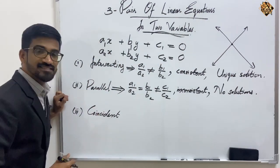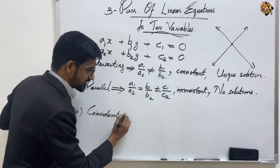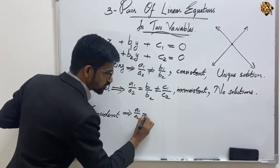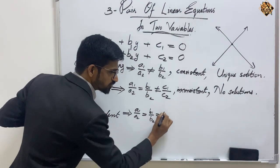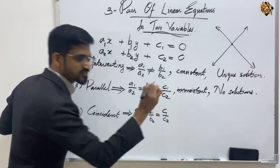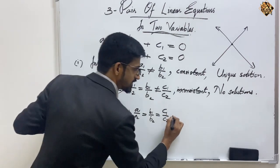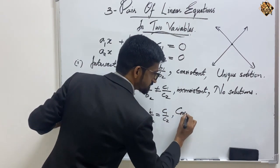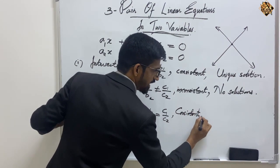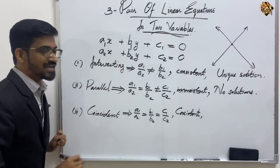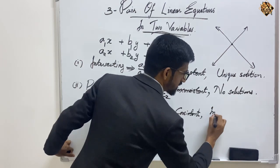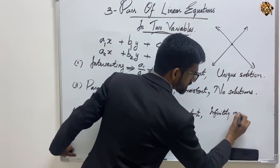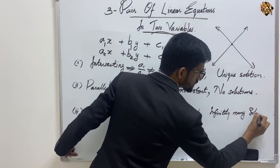If the lines are coincident, then a₁/a₂ = b₁/b₂ = c₁/c₂. In this case the pair of linear equations will be consistent and there will be infinitely many solutions.